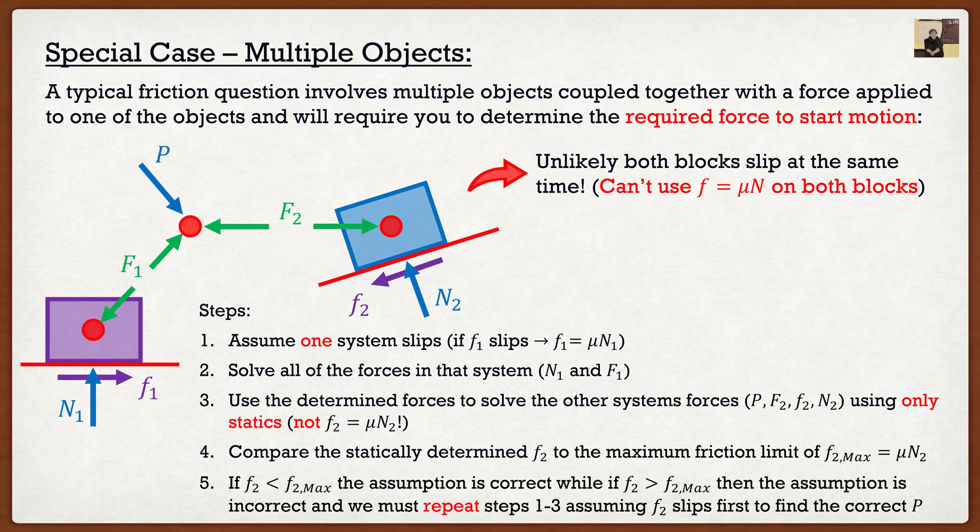Our assumption was that the system or the purple box slipped first. But in actuality, the blue box slipped first. So now that we know that the blue box actually slipped first, we have to go back and we have to use the formula f is equal to mu times n on the blue box, and then back calculate the P.